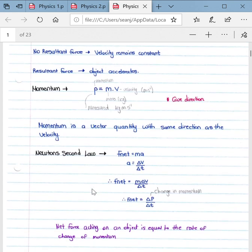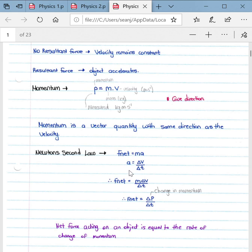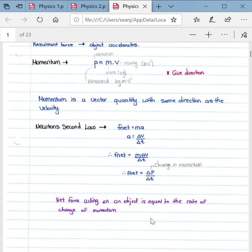Another important section, although I haven't really seen it being examined that much, is Newton's second law in terms of linear momentum. The direct definition of this is the net force acting on an object is equal to the rate of change of momentum. This can be inferred from this formula: your net force is equal to your change in momentum over your change in time.